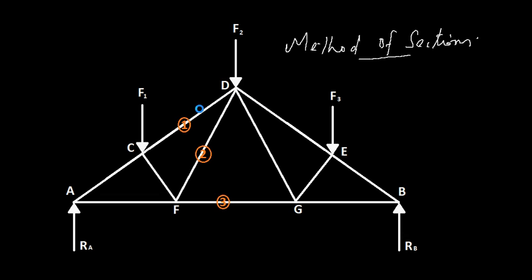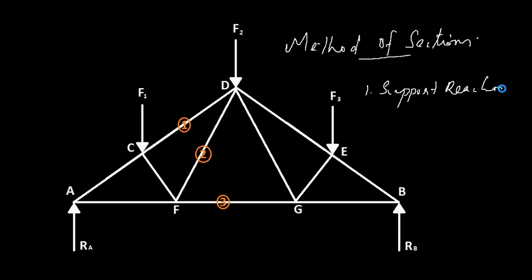As shown in the figure, we are interested in finding the forces on members 1, 2, and 3. You have got three forces acting on the truss and two reactions. So you need to find the support reactions first, and then the forces on members. That is the procedure here as well.